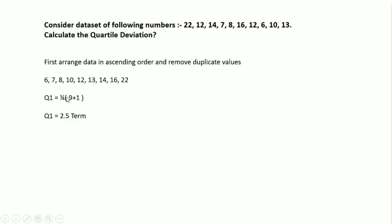Now there are nine values. Q1 can be calculated using the formula: (1/4) × (n + 1), where n is the total number of values. With n = 9, we get (1/4) × 10 = 2.5. Since the 2.5th term does not directly exist in our dataset, we need to do further calculation.